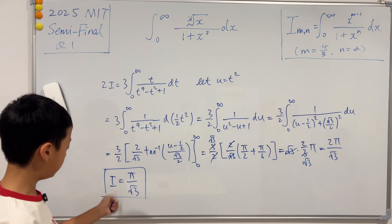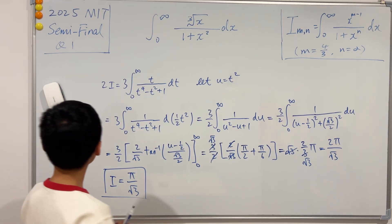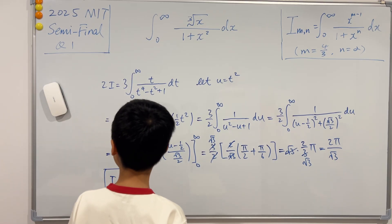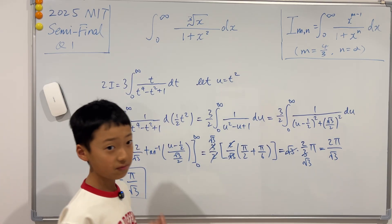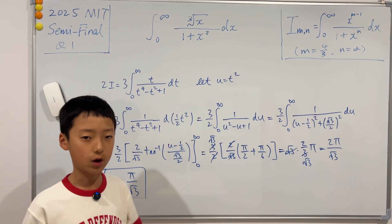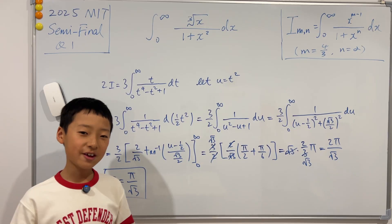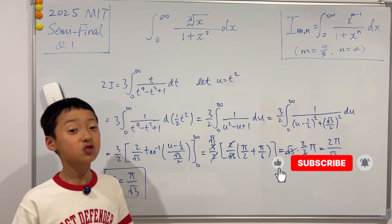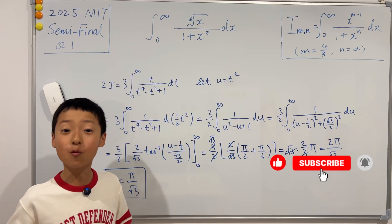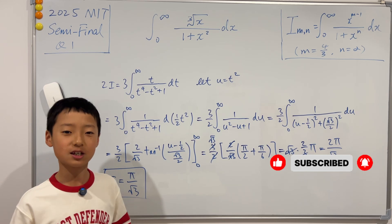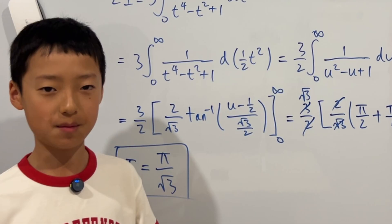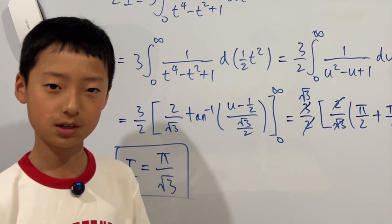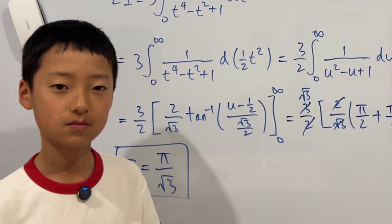So I = π/√3 is the final answer to the 2025 MIT semifinal question 1. Thank you guys so much for watching. If you enjoyed the video and want more like this, please consider liking and subscribing. If you want to master something, teach it.